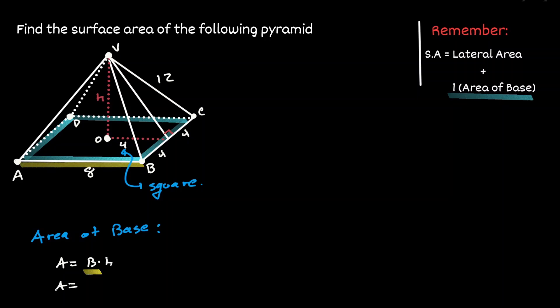which is base times height. Where the base is 8 centimeters, and the height is 4 plus 4, which is 8 as well. And when we multiply, that's equivalent to 64 centimeters squared.